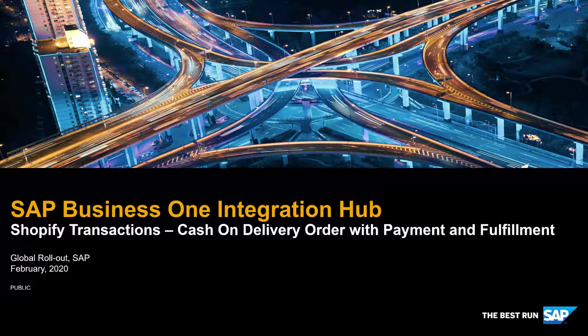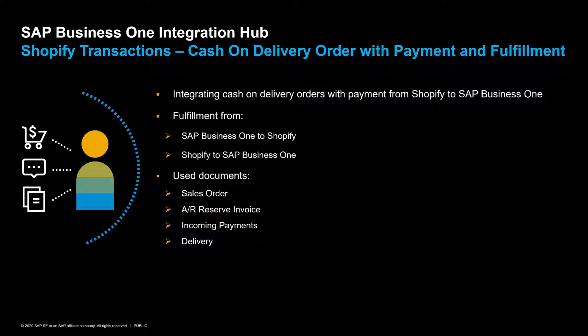SAP Business One Integration Hub: Shopify Transactions — Cash and Delivery Order with Payment and Fulfillment. We would like to give you an overview on how cash on delivery orders with payment and fulfillment are integrated from Shopify to SAP Business One. Additionally, we will show you how to fulfill these orders either in SAP Business One or in Shopify. The documents used during this process in SAP Business One are sales orders, AR reserve invoices, incoming payments, and deliveries.